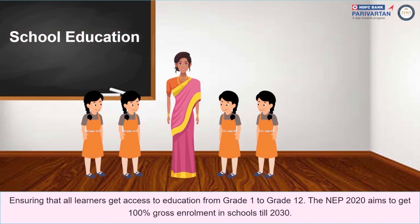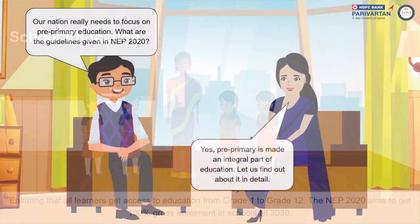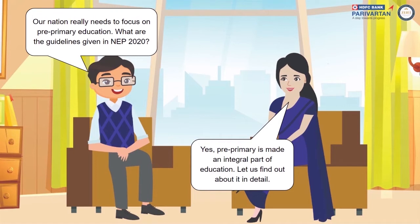School education ensures that all learners get access to education from Grade 1 to Grade 12. NEP 2020 aims to achieve 100% gross enrollment in schools by the year 2030. Our nation really needs to focus on pre-primary education. What are the guidelines given in NEP 2020 about this? Pre-primary is made an integral part of education — let us find out about it in detail.